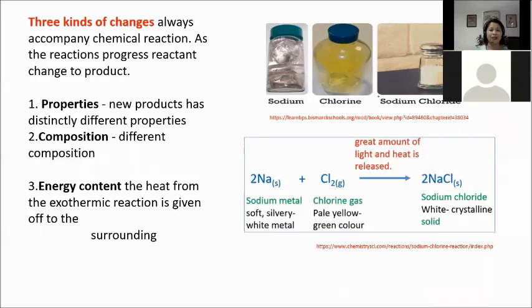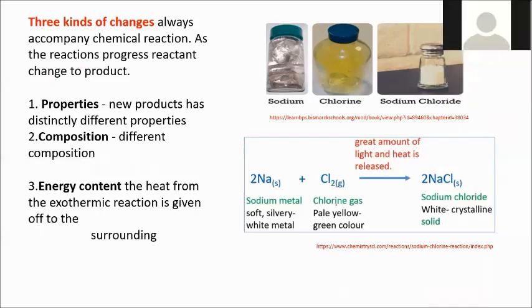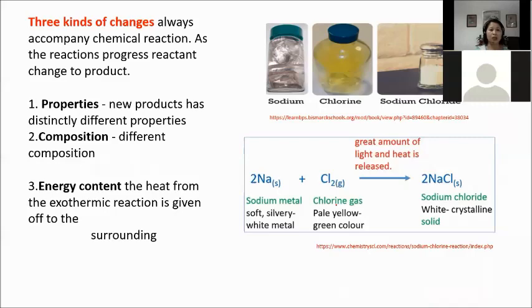There are three kinds of changes that always accompany a chemical reaction. As the reaction progresses, reactants change to products. Those changes are: properties, composition, and energy content. For example, we have sodium metal and chlorine gas forming sodium chloride. What are the properties of sodium? Sodium is a soft, silver-white metal that reacts violently with water.